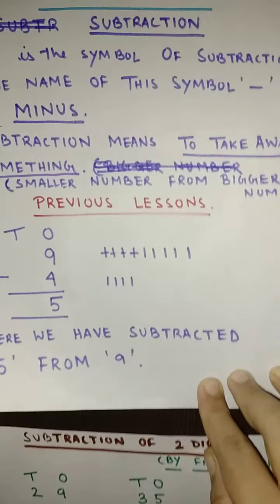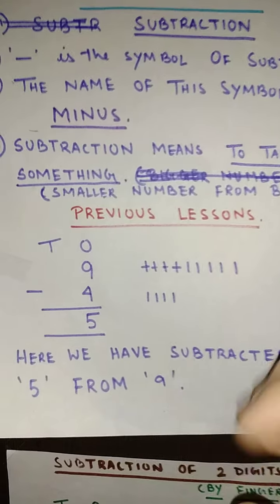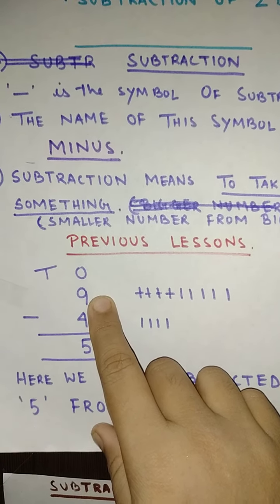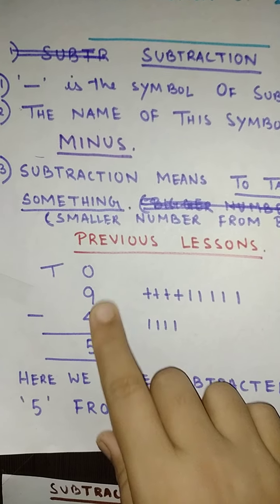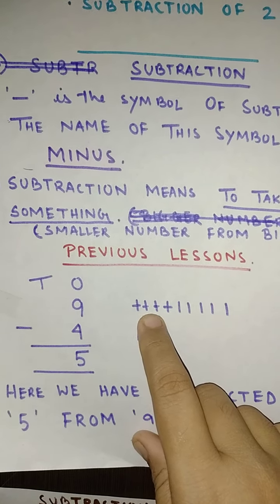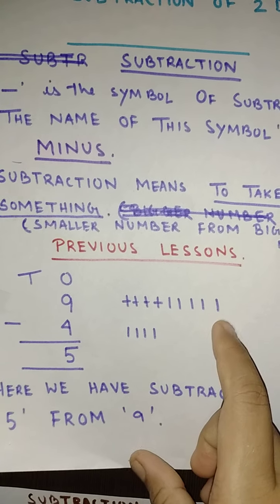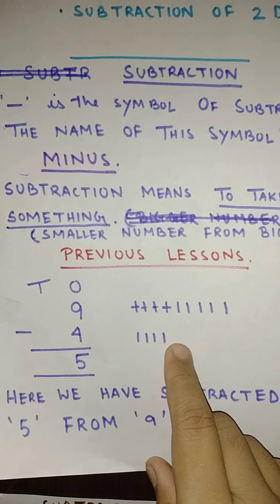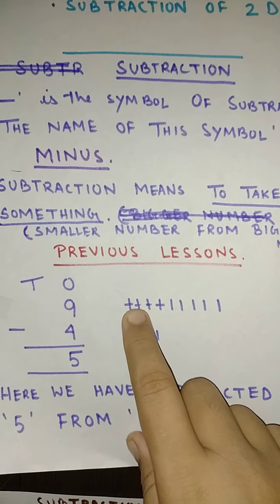Now before we move on to the next part, let us make a quick revision of whatever you have done in the last class. Now here you can see that this is my 9 which is a bigger number and this is my 4 which is a smaller number. So what I have done? You know how to do this one. You have done 9 such lines and here because 4 is there so you have drawn 4 such lines.